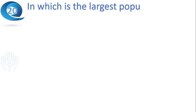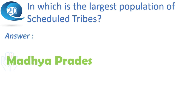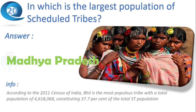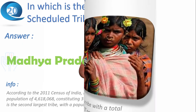Next question: in which state is the largest population of scheduled tribes? Answer: Madhya Pradesh. According to the 2011 census of India, the Bhil is the most populous tribe with a population constituting 37.7% of the total ST population. The Gond is the second largest tribe, constituting 35.6%.